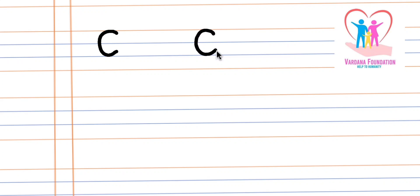Small c is written in two blue lines. Touching from first blue line to second blue line, a small half circle will make small script letter C.